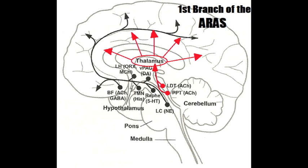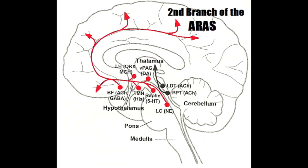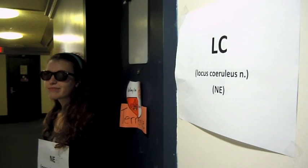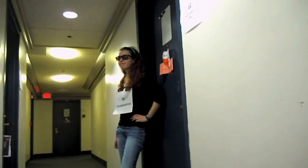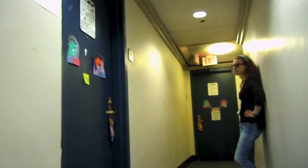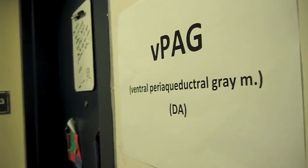Now for the second branch of the ARAS. This branch originates in the upper brainstem and the caudal hypothalamus. The nuclei in this second branch consist of a series of monoaminergic cells that project to the basal forebrain, lateral hypothalamus, and the cerebral cortex. The locus ceruleus, or LC, of the medulla secretes norepinephrine, which acts as an excitatory neurotransmitter in the ARAS. The RALF nuclei of the midbrain secrete serotonin, which also acts as an excitatory neurotransmitter. The ventral periaqueductal gray matter, or VPAG, is a collection of cells that secrete the neurotransmitter dopamine.